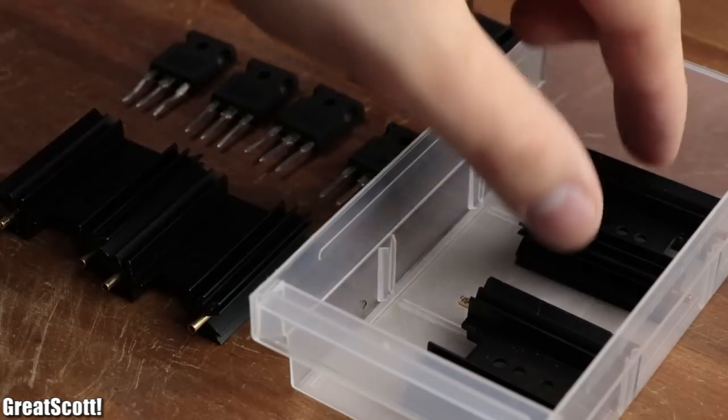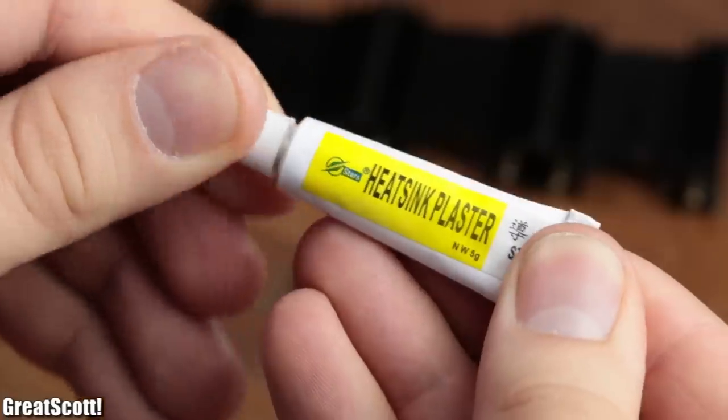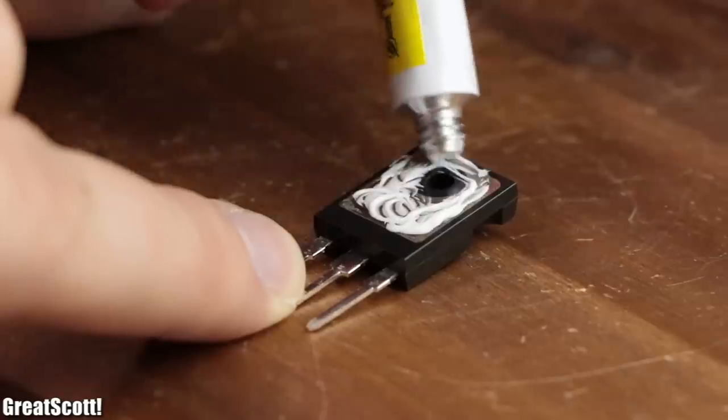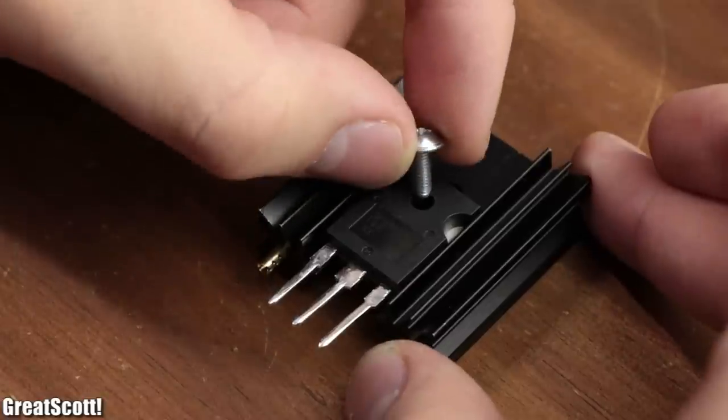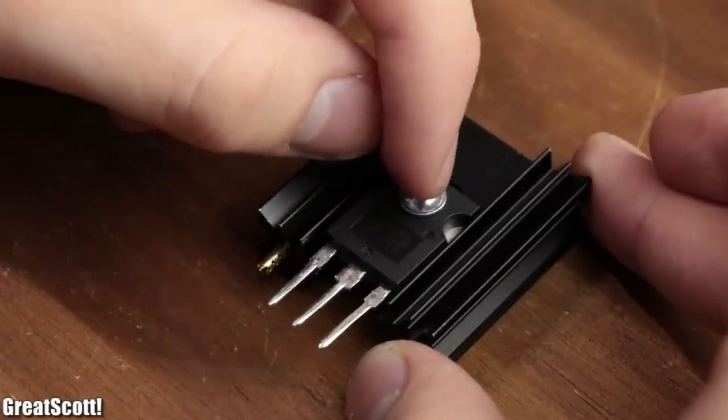But nevertheless, I started the circuit build by applying heatsink paste to the four IGBTs, pressed them onto the heatsinks, and secured them in place with an M4 bolt and nut.